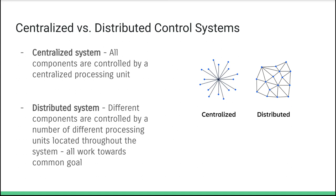Next, centralized and distributed control systems. A centralized system is what we've seen before — basically one microprocessor, with a variety of inputs all feeding into that one processor, and outputs originating from that processor.